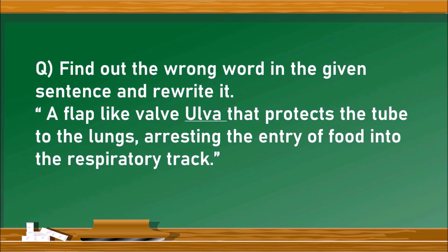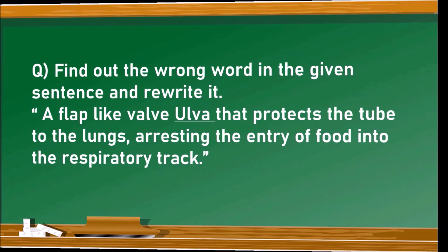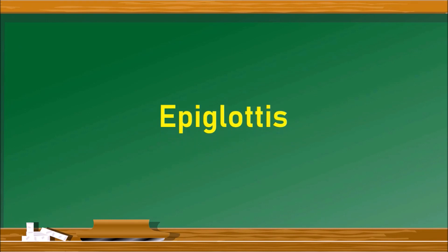Find the wrong word in the given sentence and rewrite it. The underlined word is 'ulva' — a flap-like wall that protects the tube to the lungs, arresting the entry of food into the respiratory tract. The correct word is not 'ulva' but 'epiglottis.' The epiglottis is the flap-like wall that arrests the entry of food into the respiratory tract.